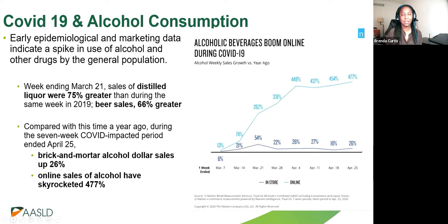Early epidemiological and marketing data indicate a spike in alcohol use by the general population. Nielsen reported that in the week ending March 21, sales of distilled liquor were 75% greater than the same week in 2019, and beer sales were up 66%. By the end of April, brick-and-mortar alcohol sales were up 26%, while online sales of alcohol skyrocketed 477%. Alcohol is the fastest-growing e-commerce category currently in the U.S.